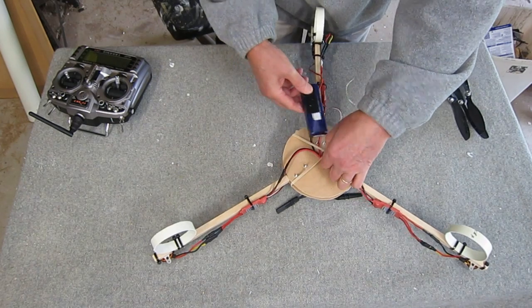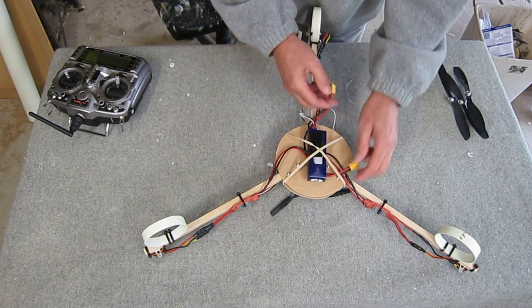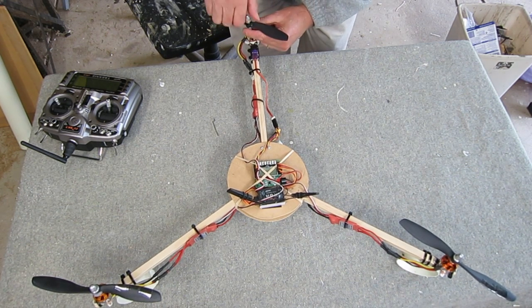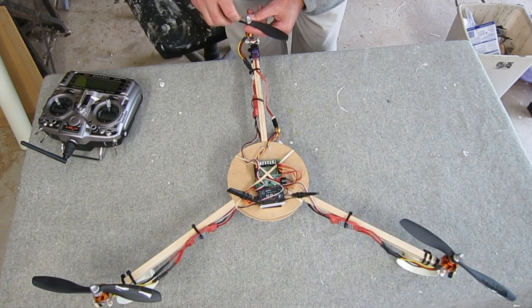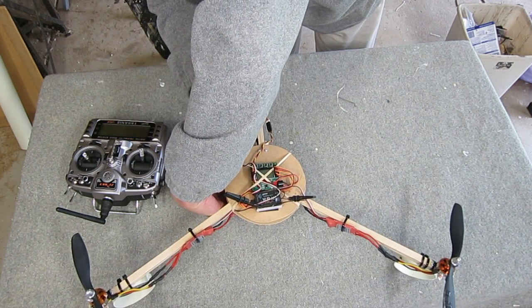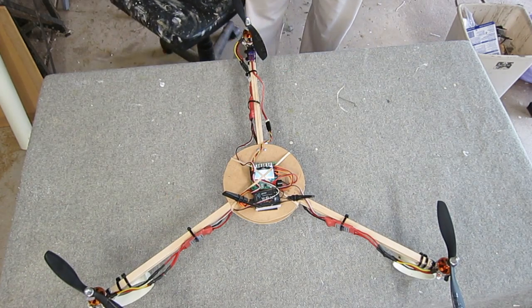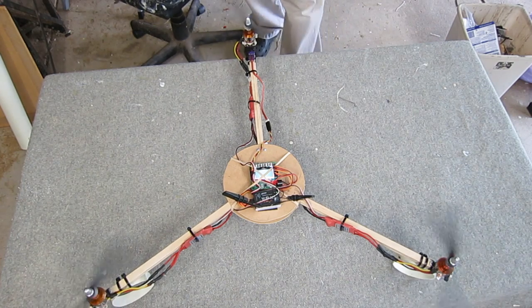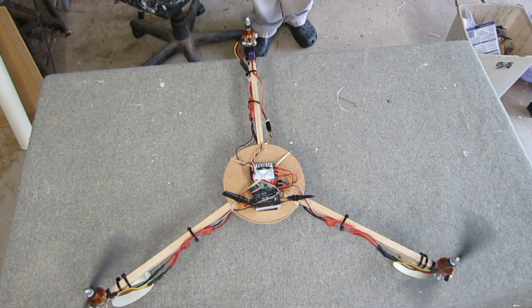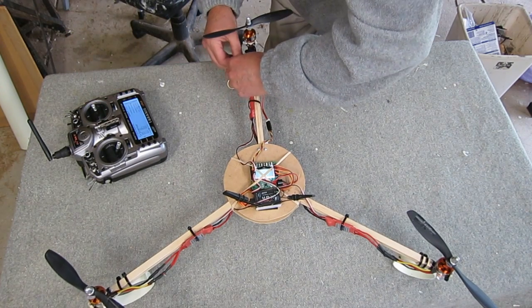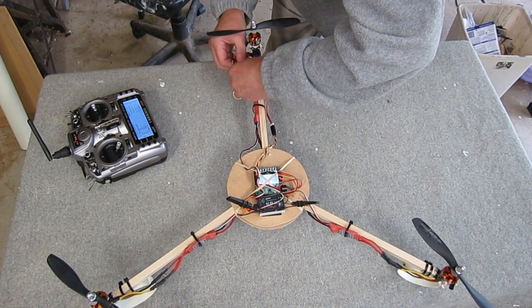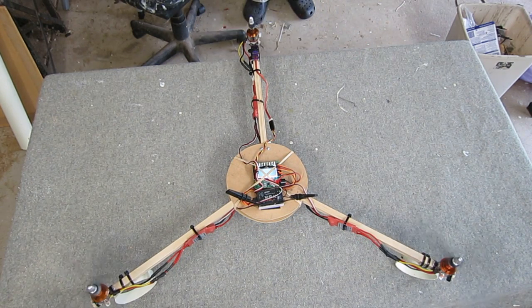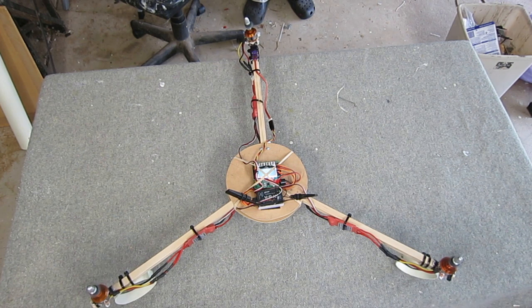Now I'm just popping the battery under some rubber bands for the moment for the maiden and just to set it up. Popping the props on and just make sure it's all turning the right direction. Now calibrating the ESCs is another whole area that needs a fair bit of explanation. I couldn't get them all to calibrate at the same time, I had to disconnect them and do them all individually. That rear motor is still going the wrong way for the prop that I've put on there so I'll just swap over a couple of those leads.